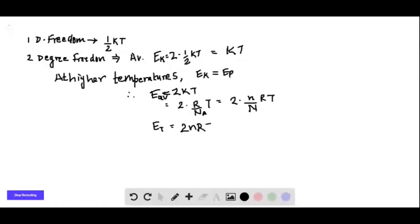If there are capital N molecules, then total energy is capital N into E average, denoted as E_T. So E_T equals 2NRT. Now compare this with energy equals NCV T, where T is temperature. If you compare these two, you get CV equals twice R. If it was three-dimensional, we would get this to be 3R.